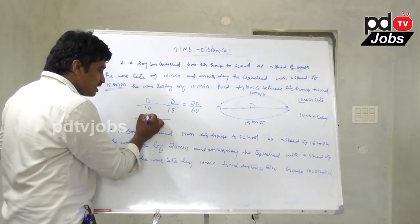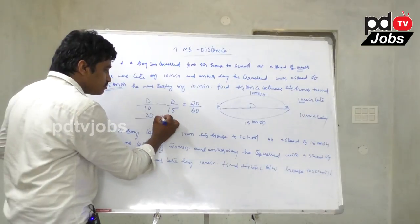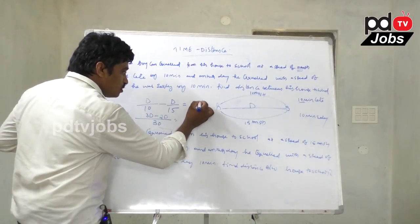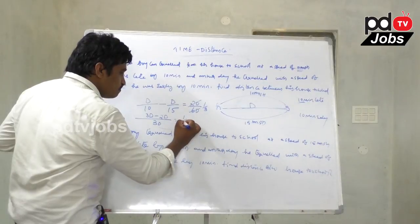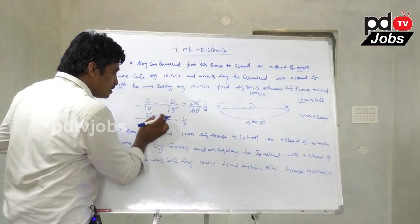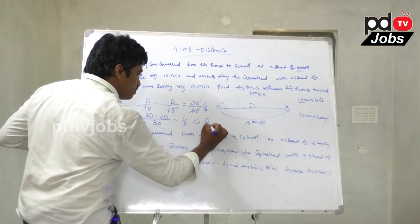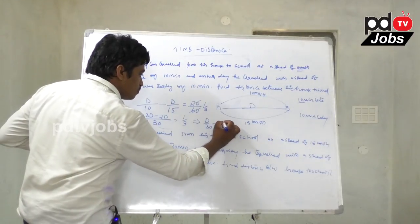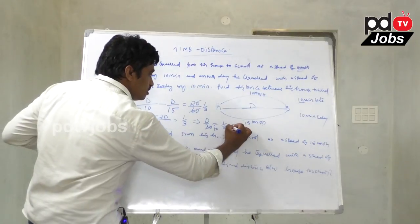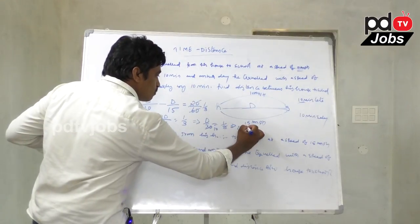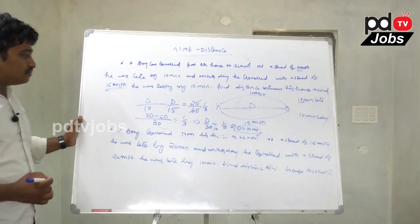Setting up the equation: D/10 minus D/15 equals 20/60. The LCM of 10 and 15 is 30. So 3D minus 2D over 30 equals 1/3. Therefore D = 10 km. The distance between his house and school is 10 km.